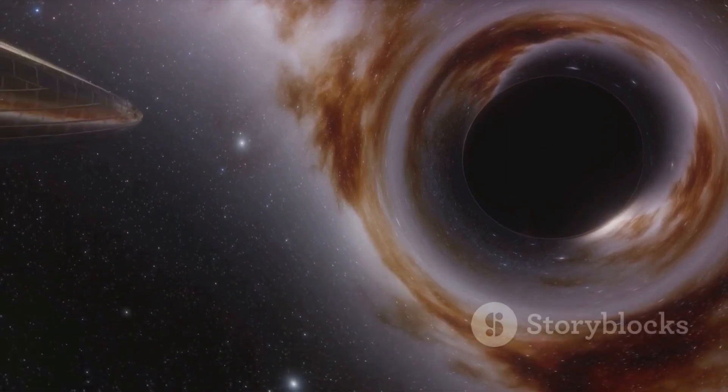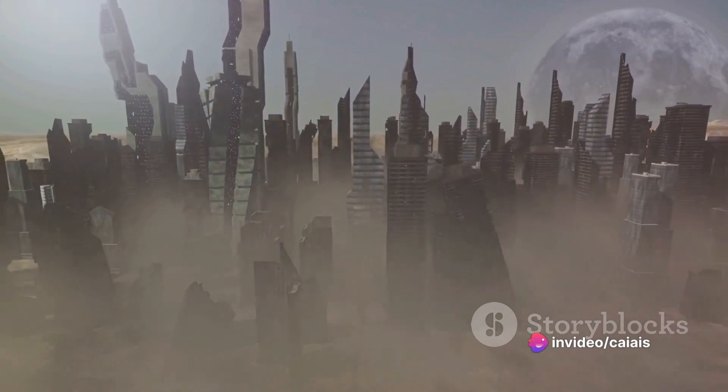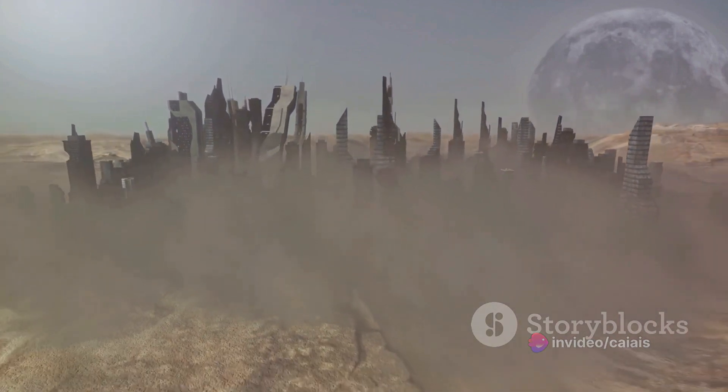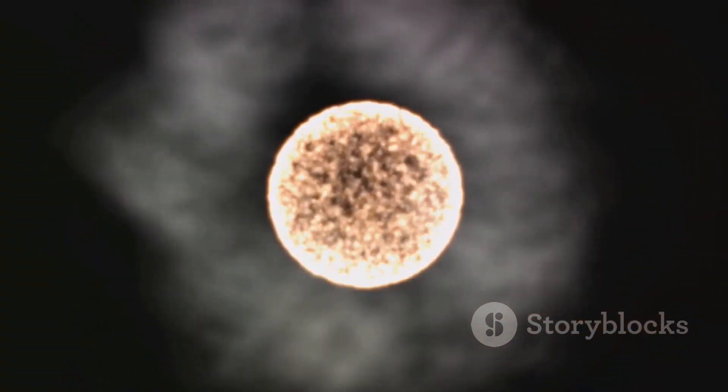But the heat is only part of the story. A neutron star's gravity is so powerful it's almost inconceivable. This immense gravitational pull, far stronger than Earth's, could start to tear our planet apart, piece by piece. Earth's mountains, oceans, cities—nothing would be safe from this celestial cataclysm.